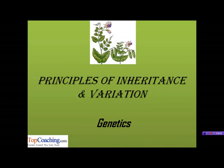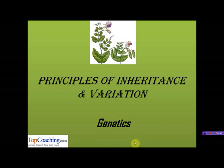Hello students and welcome to the next chapter in Marti, that is Principles of Inheritance and Variation. It is the first chapter in the section Genetics, and in this chapter we are going to cover principles related to Mendelian inheritance, chromosome theory of inheritance, gene interaction, incomplete dominance, codominance, complementary genes, multiple allelism, linkage and crossing over, inheritance patterns of hemophilia and blood groups in human beings, and some other related topics with a few examples.